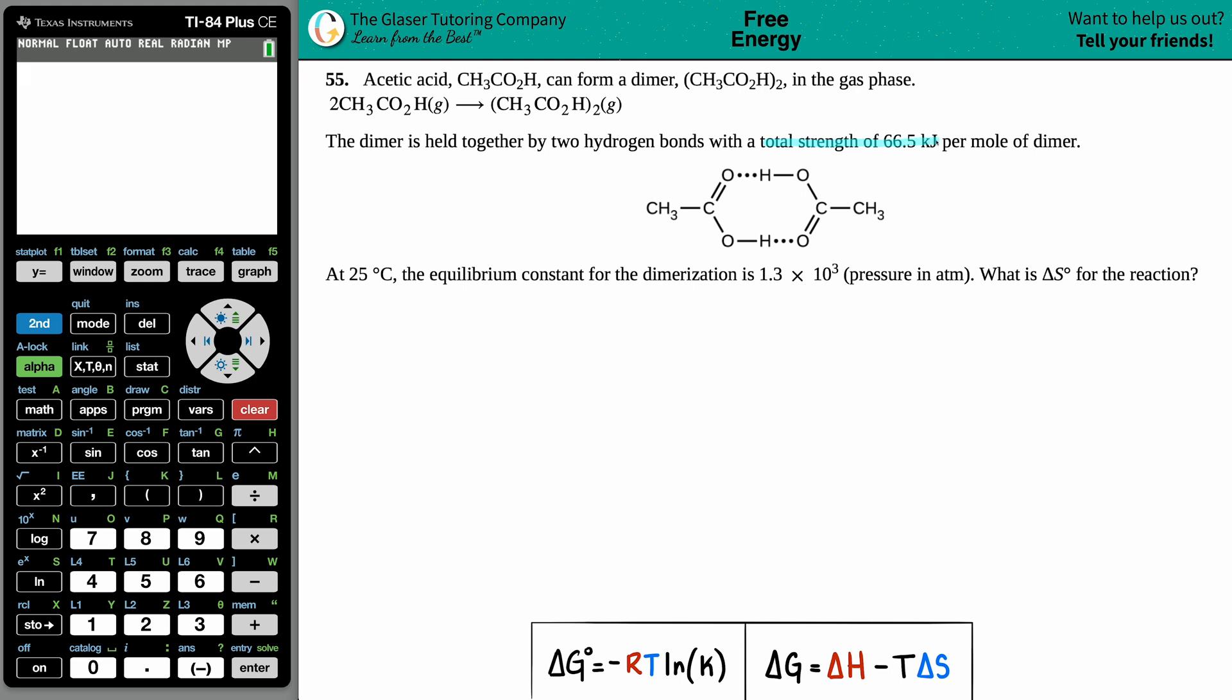At 25 degrees Celsius, the equilibrium constant for the dimerization is 1.3 × 10³ (pressure in atm). What is the ΔS for the reaction? Okay, so essentially we have to find out what that change in entropy is.